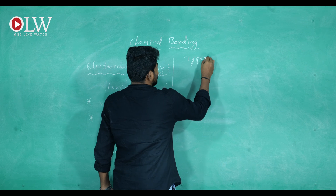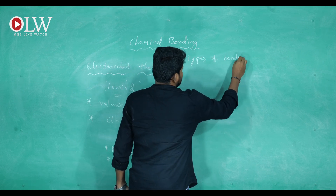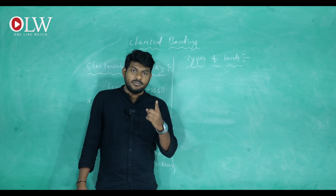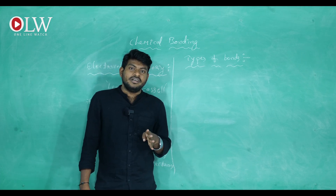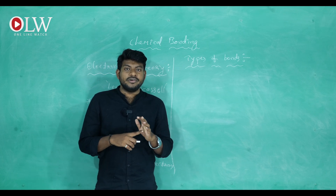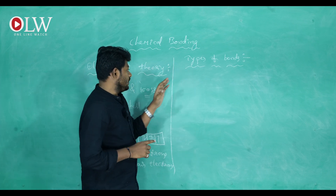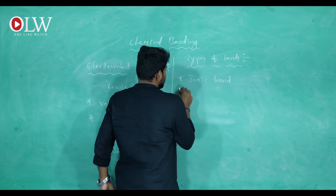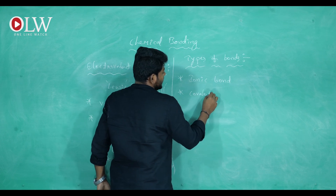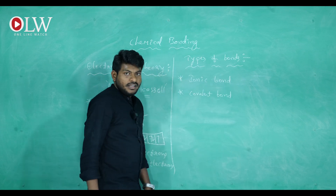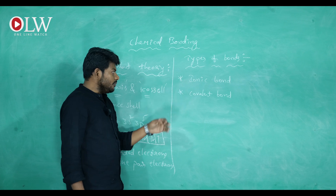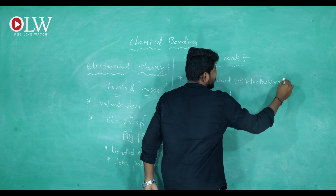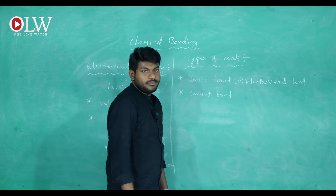In this chapter on chemical bonding, there are several types of chemical bonds — ionic bond, covalent bond, coordination covalent bond, and hydrogen bond. However, according to our tenth class syllabus, only two bonds are covered: ionic bond and covalent bond. The ionic bond can also be called an electrovalent bond.